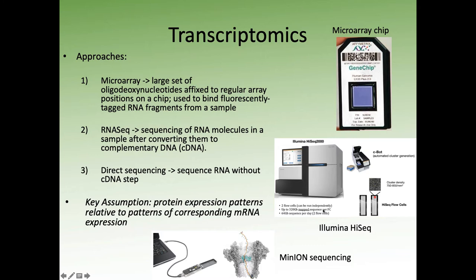When we think about how transcriptomics is accomplished, historically it would have been accomplished with something called a microarray — a chip like this. What you see on these chips is basically a ton of different oligonucleotides attached in this area. We know the position of all these oligonucleotides; they code for very specific targets. We use these positions and a series of fluorescent washes with different types of probes to identify which genes are active in different types of samples.